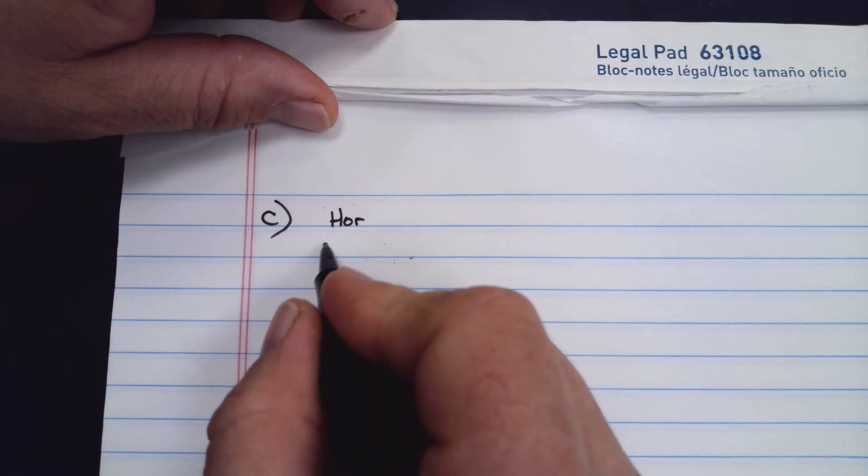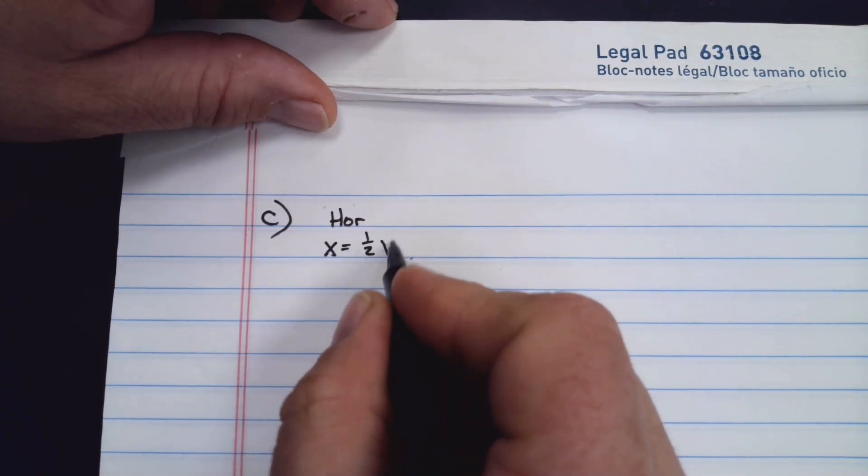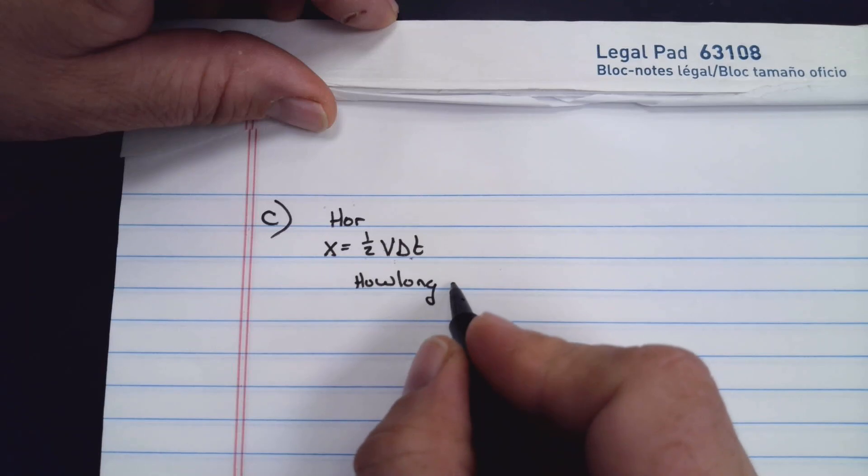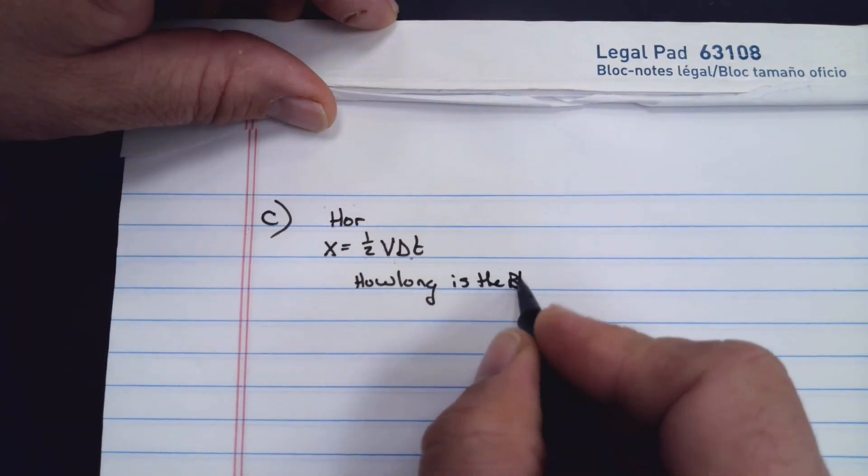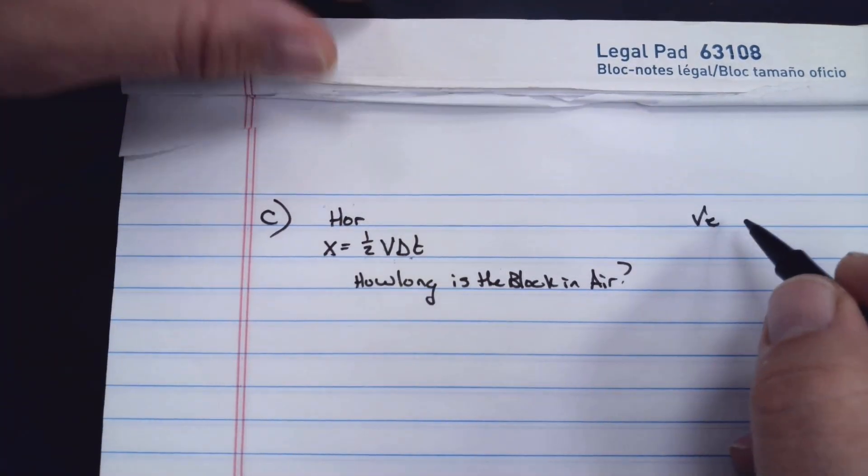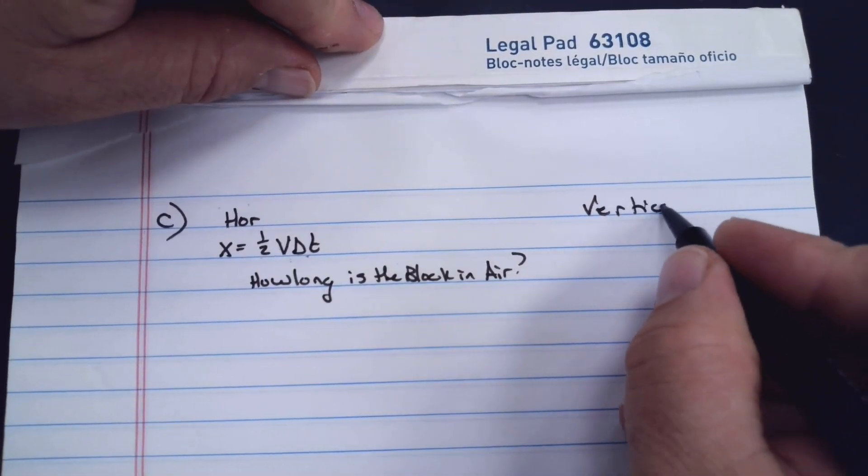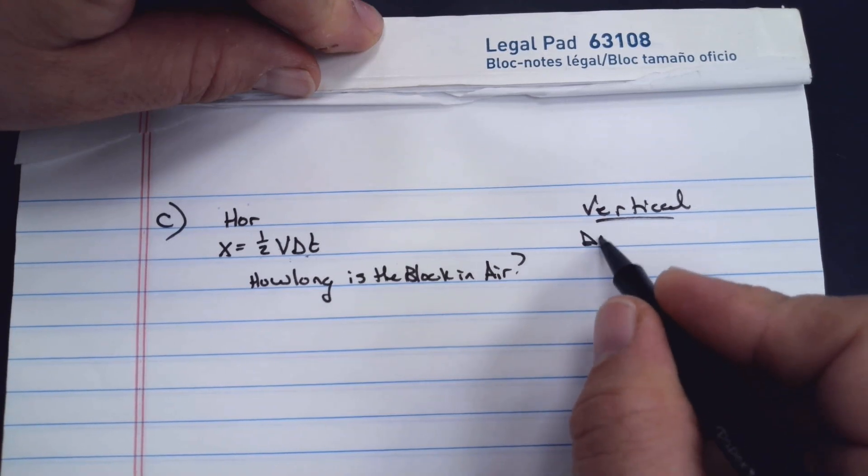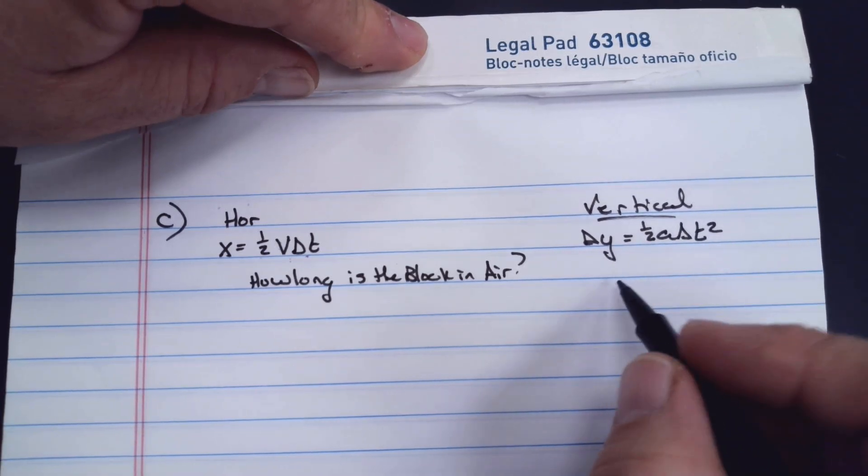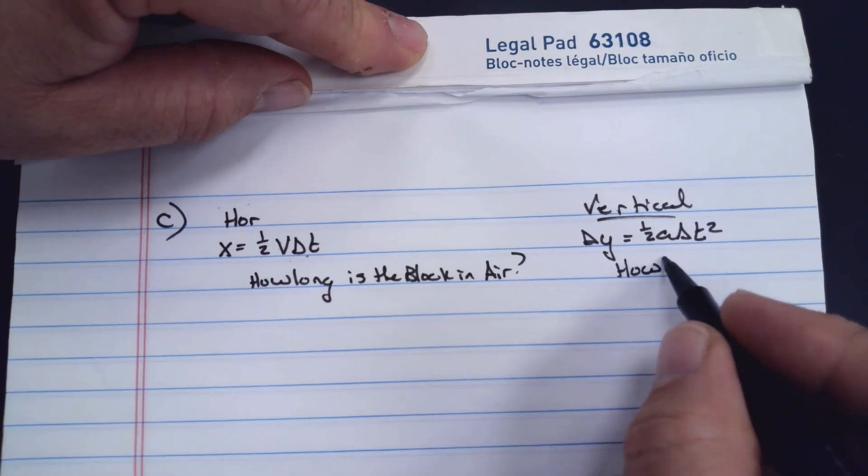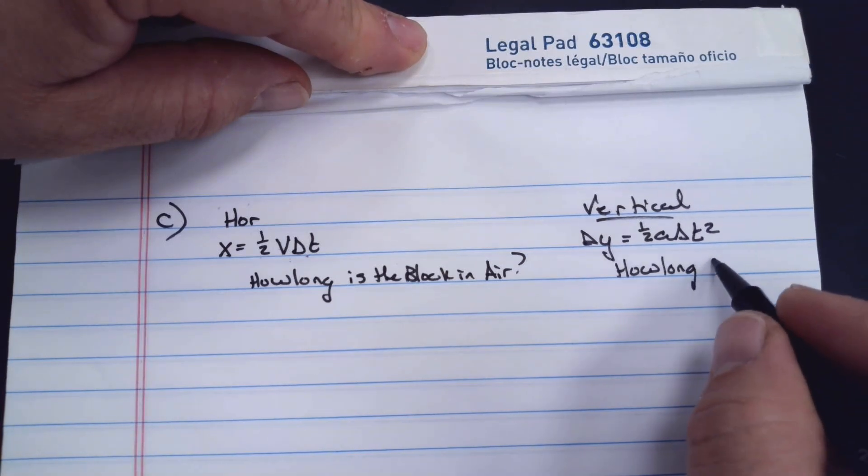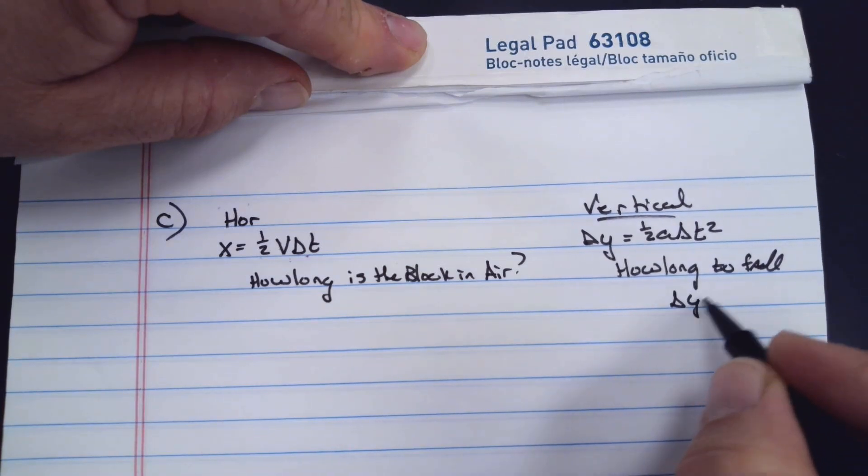Let's move to part C. They're trying to model the range, the magnitude of range R, the distance on the floor. We've got our horizontal velocity, and from that we can figure out how long the block is in the air. The vertical, we're going to use from our kinematic equations. This will tell me how long does it take to fall a change in y.